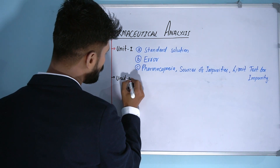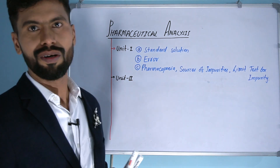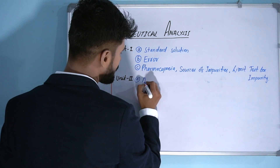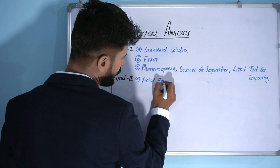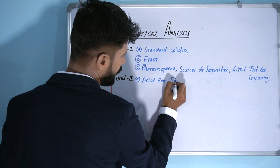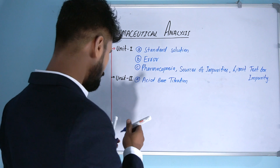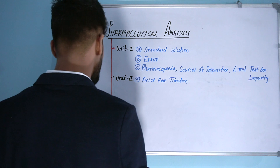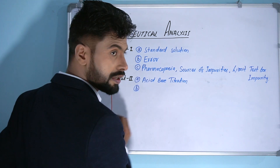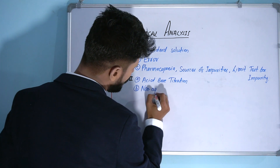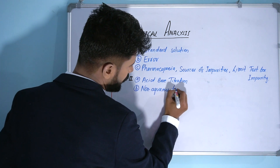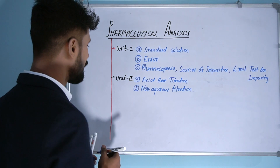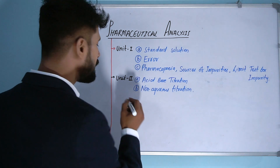Coming to unit two, it has two chapters. Chapter one is about acid-base titration, and chapter two is about non-aqueous titration. These two chapters make up unit two.